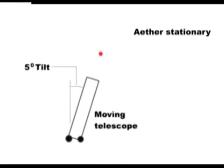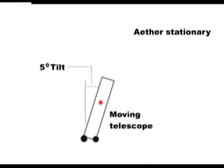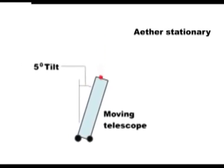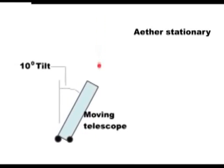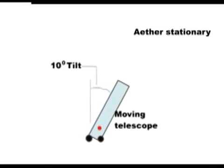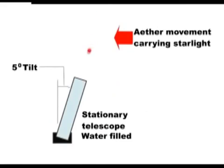To recap, if it is the telescope that is moving, then when it is filled with water, it has to be tipped further to see the star. If the telescope is stationary and the starlight drifting past us, then it does not have to be tipped further.